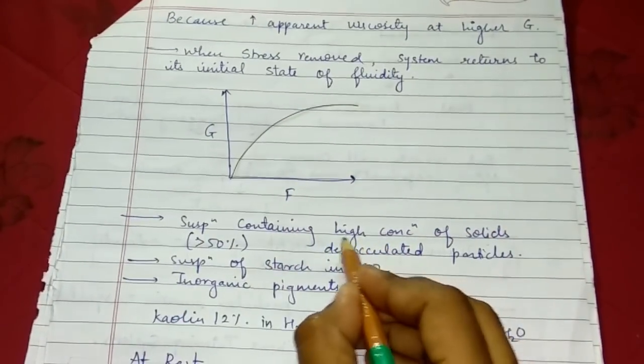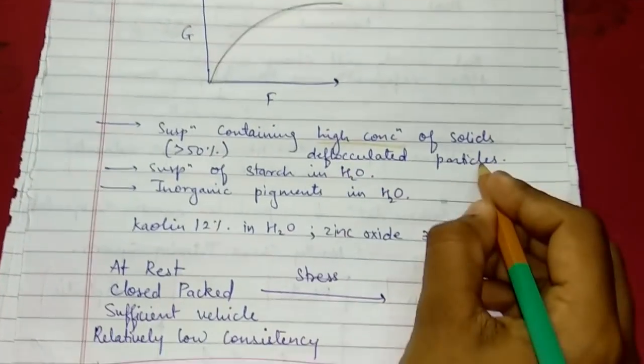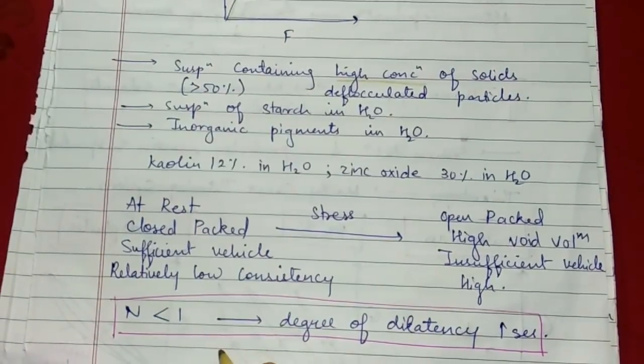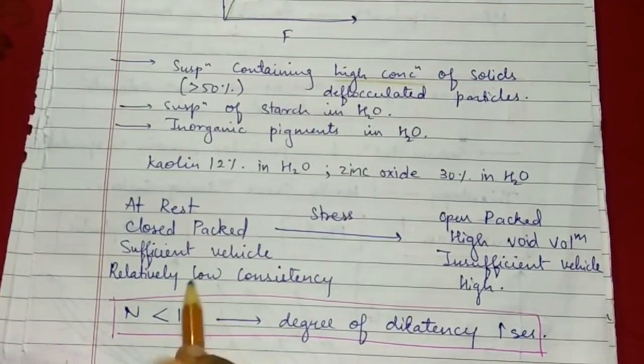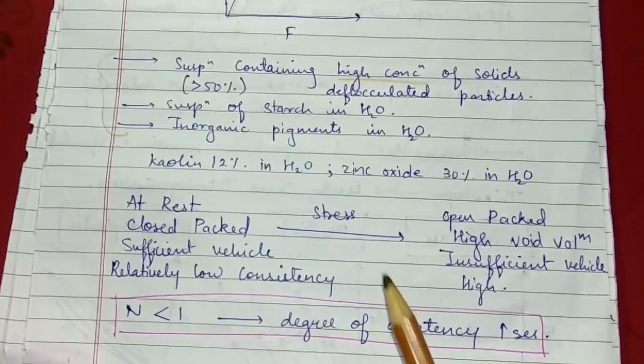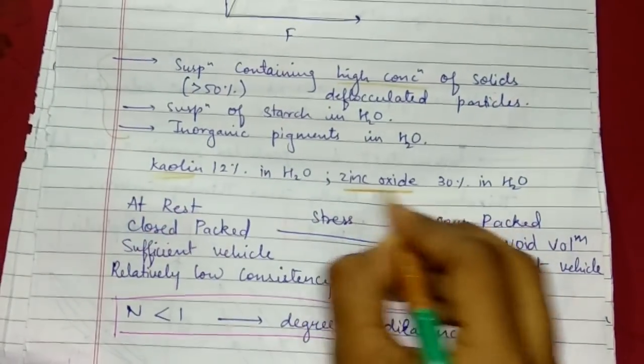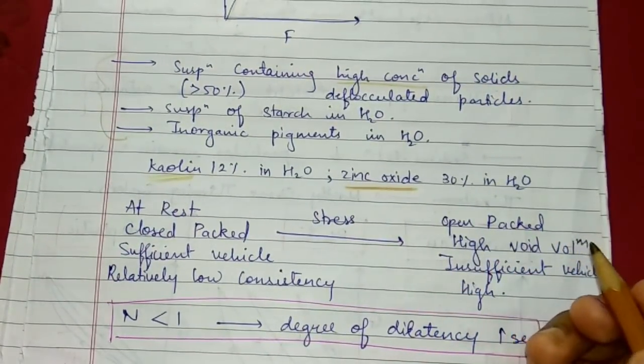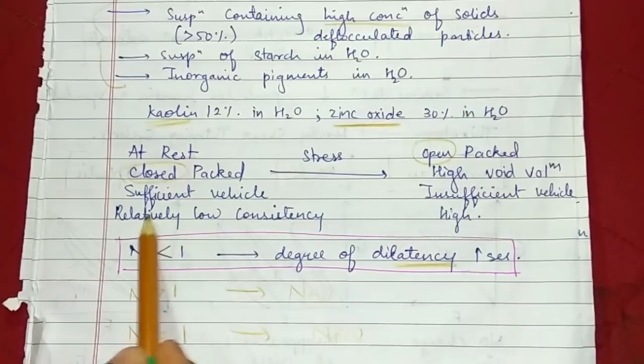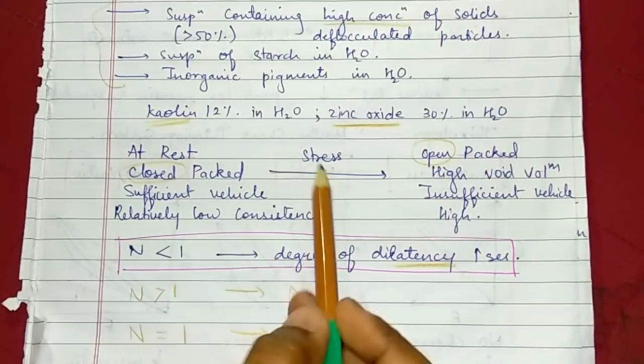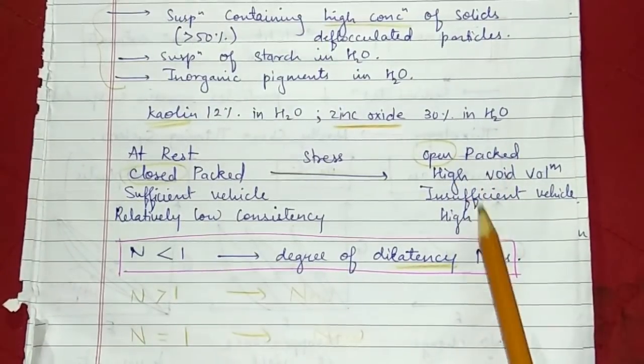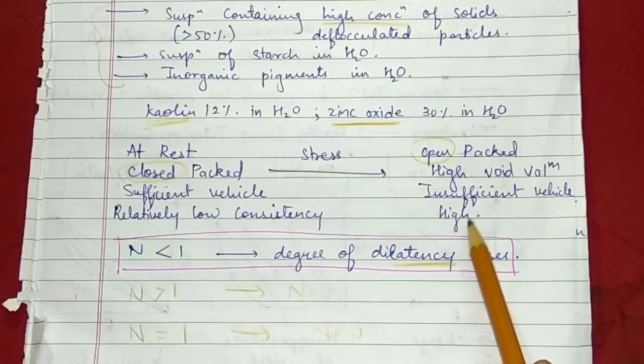Suspensions containing high concentration of solid or deflocculated particles follow the dilatant flow. When stress is removed, system returns to its initial state of fluidity. Suspensions of starch in water and organic pigments in water are examples of dilatant flow. Mostly kaolin and zinc oxide swell in water. At rest, it is closed packed with sufficient vehicle and relatively low consistency. But when stress is applied, it is open packed with high volume, insufficient vehicle, and high consistency.